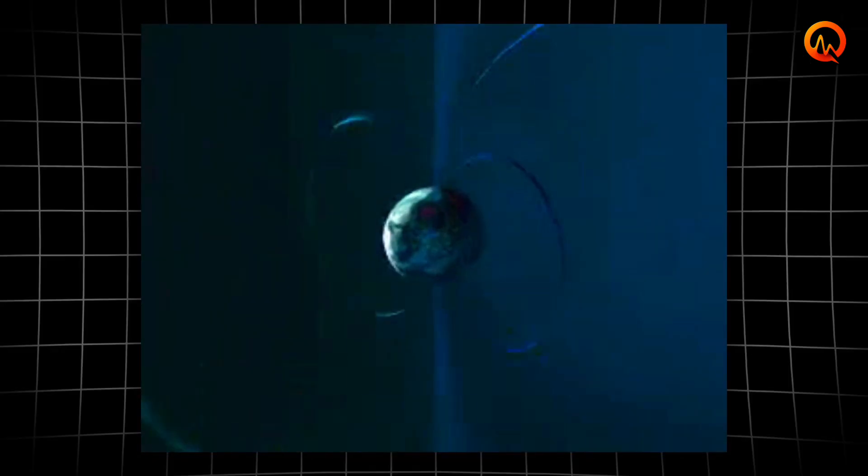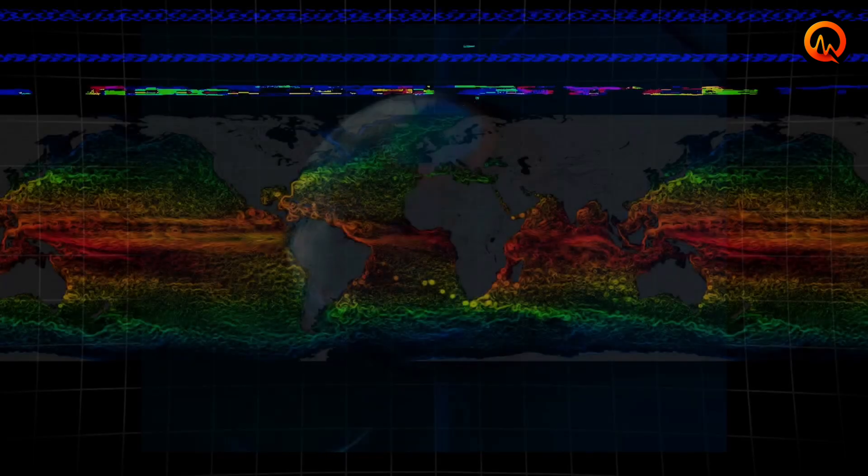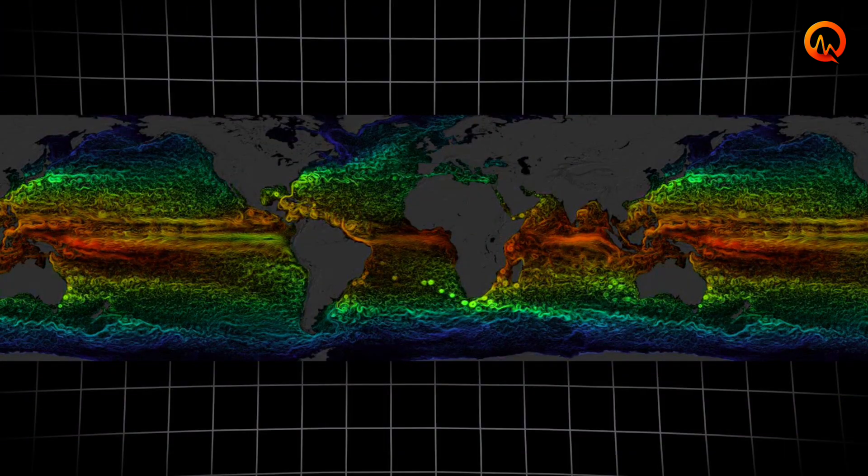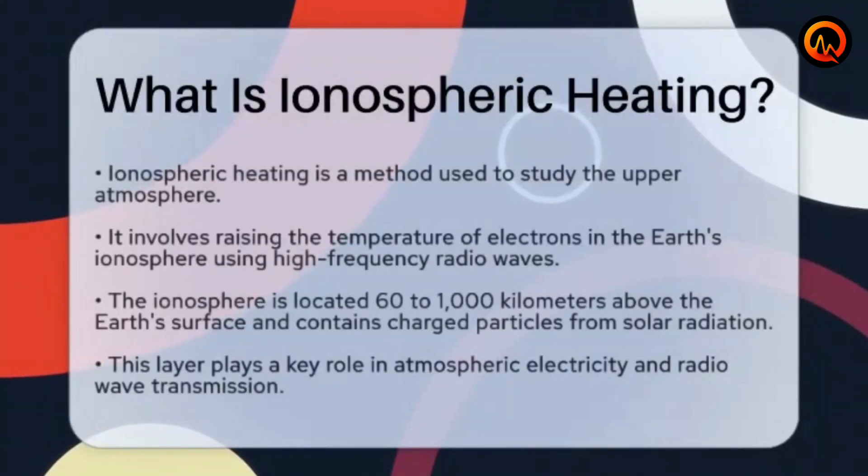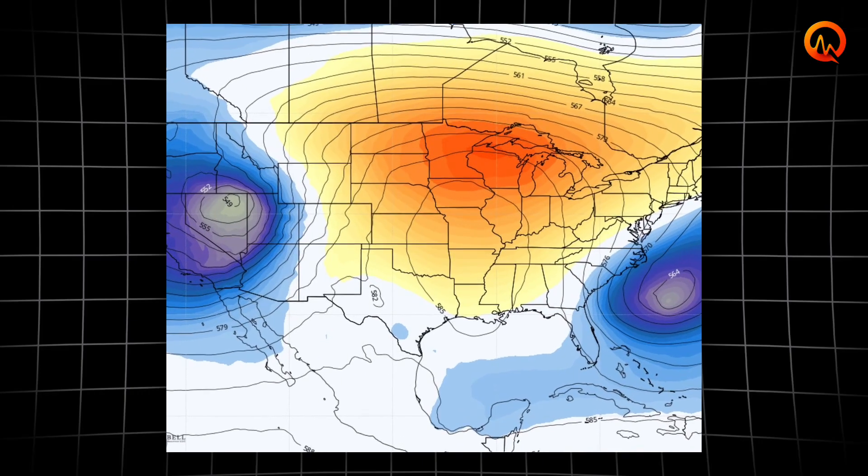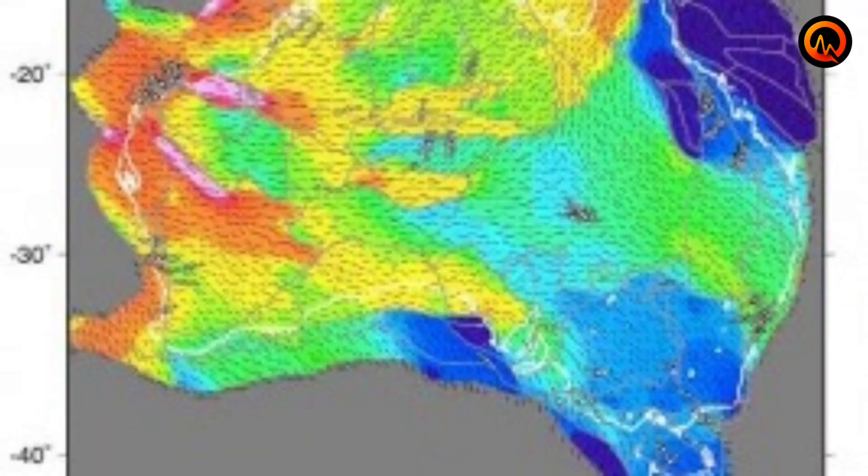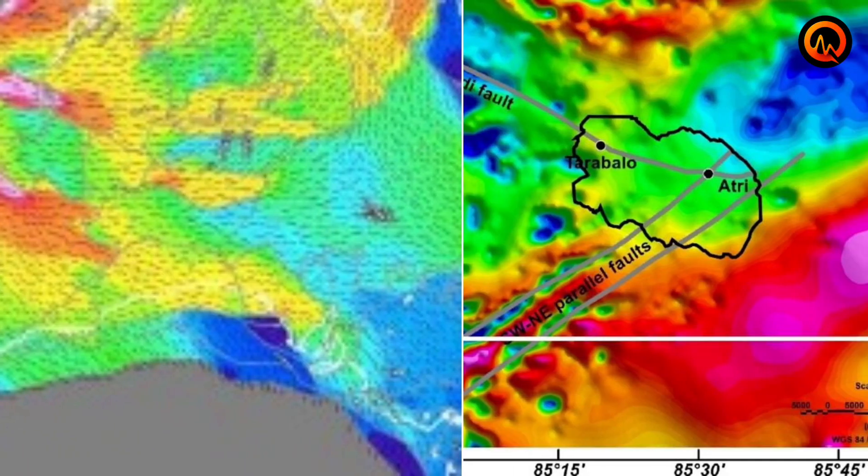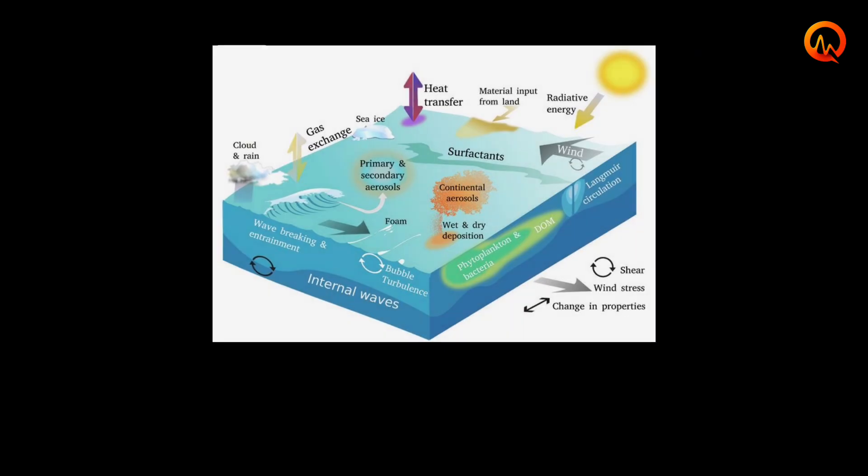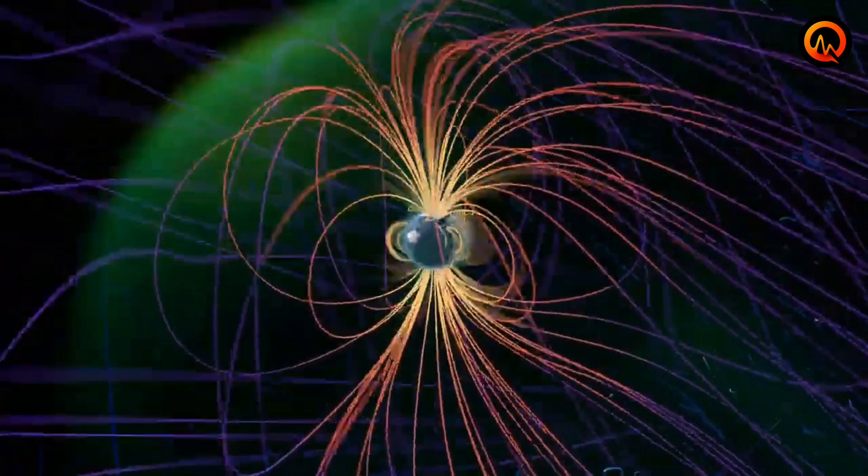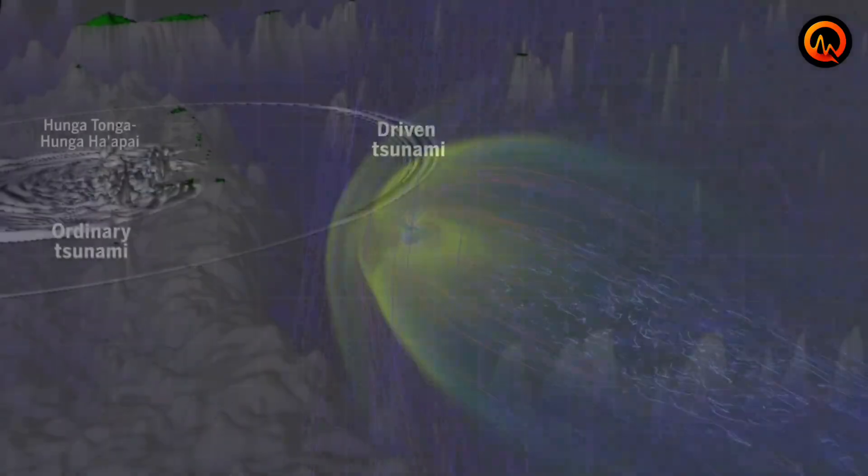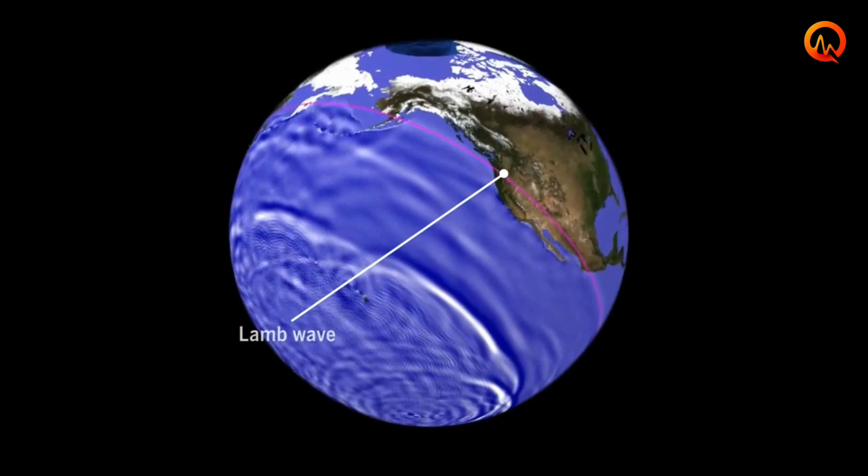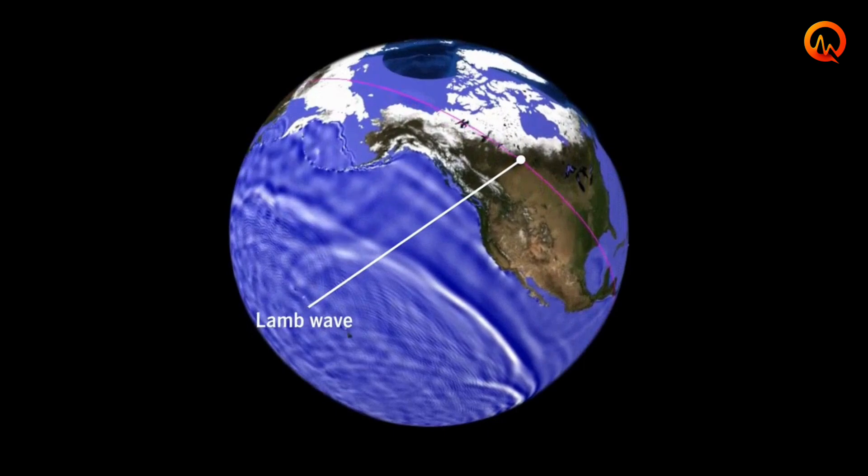The electromagnetic effects extend beyond direct electrical currents. Solar radiation also influences atmospheric and oceanic circulation patterns through heating and electromagnetic interactions. These changes create subtle but persistent pressure variations that can affect tectonic stress patterns across large regions. Atmospheric coupling represents another pathway. Intense solar radiation heats the upper atmosphere unevenly, creating pressure gradients that propagate downward through the atmosphere and into the ocean.